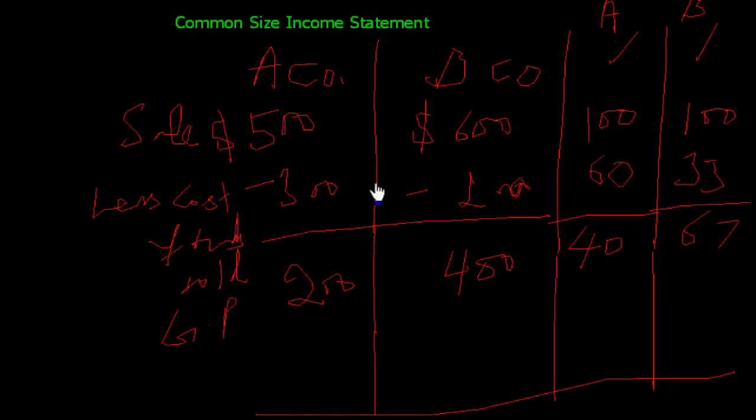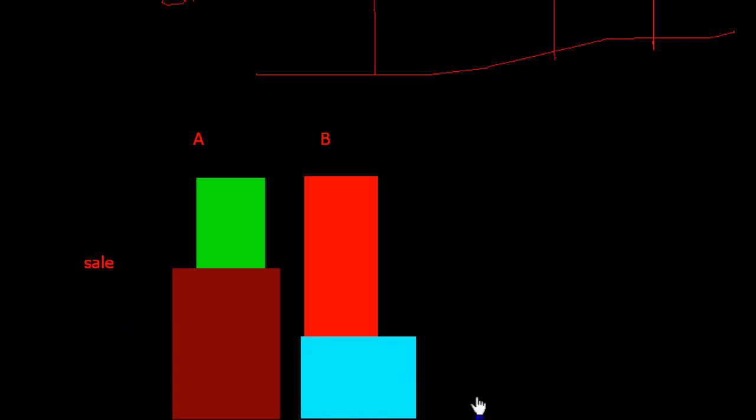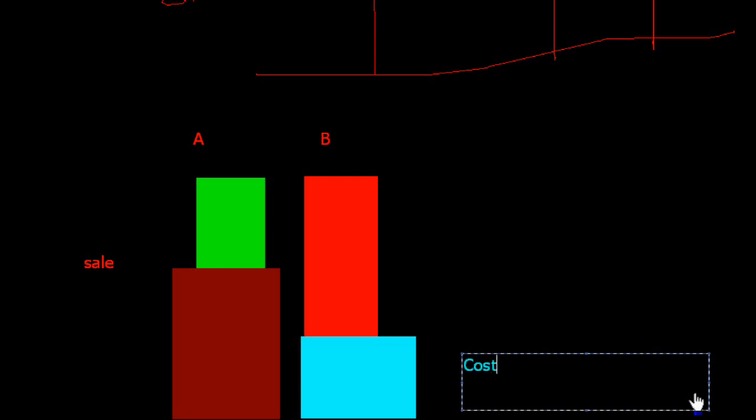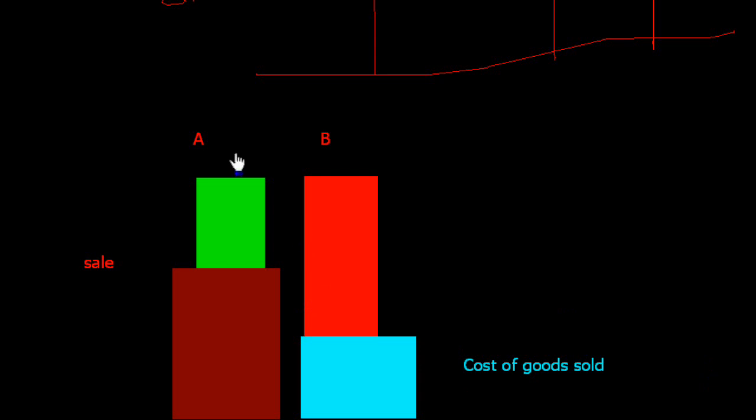Now we will check: Company A's cost of goods sold is about 60%, but in Company B's case it is just 33% cost of goods sold. From this we can get the idea that Company A has less gross profit.